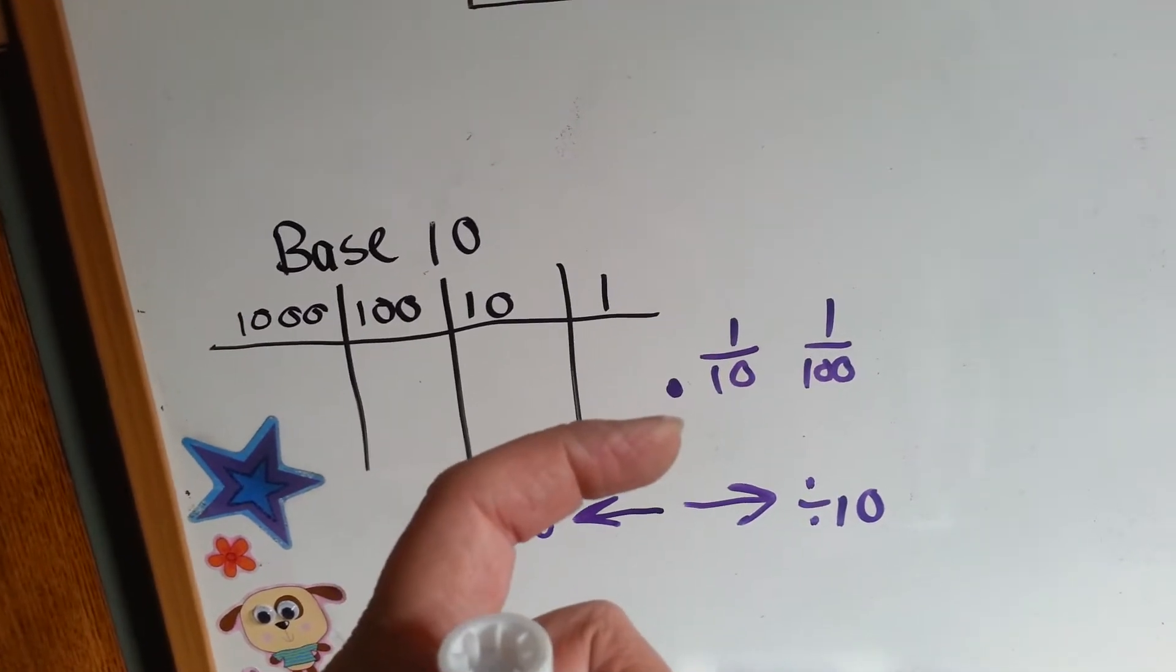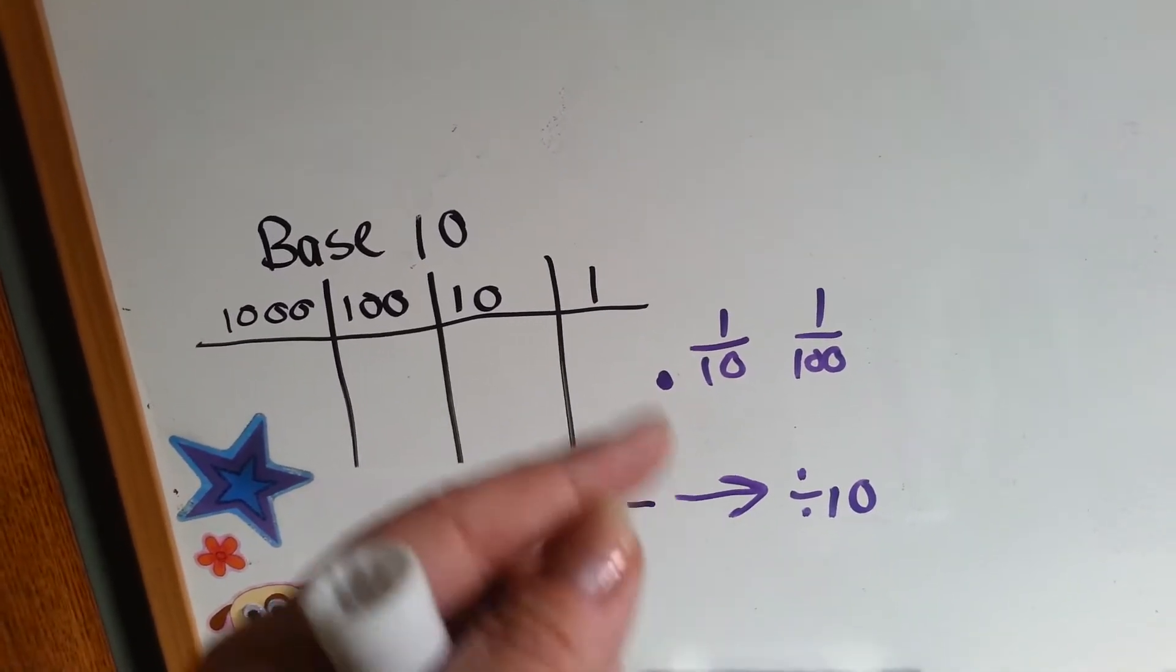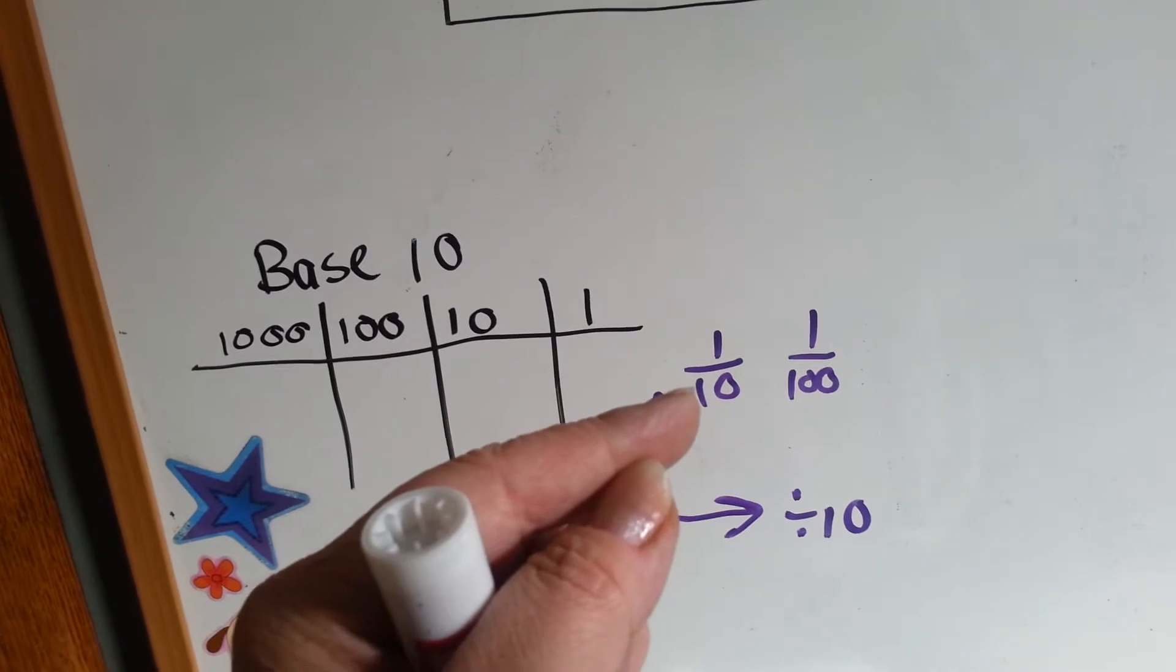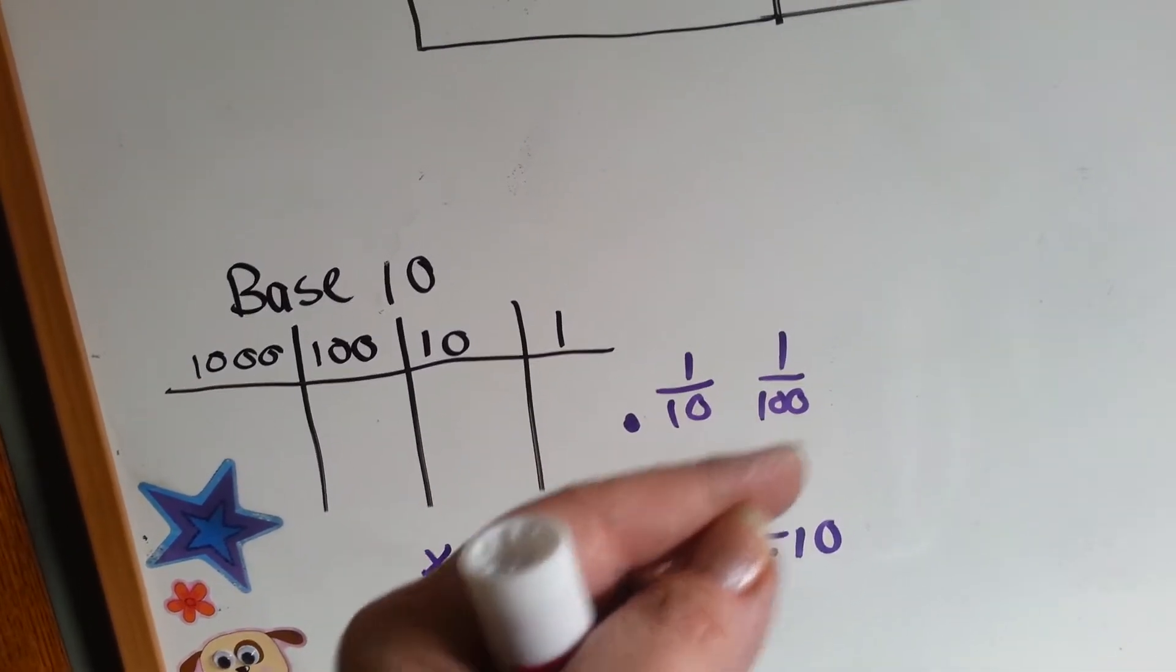On the right side of the decimal point, we divide by 10. 1 divided by 10 is a tenth, 1 tenth divided by 10 is a hundredth, etc.